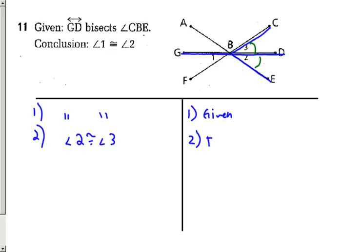That is strictly from the given - if bisector, then two congruent angles. That's what I used from the given.